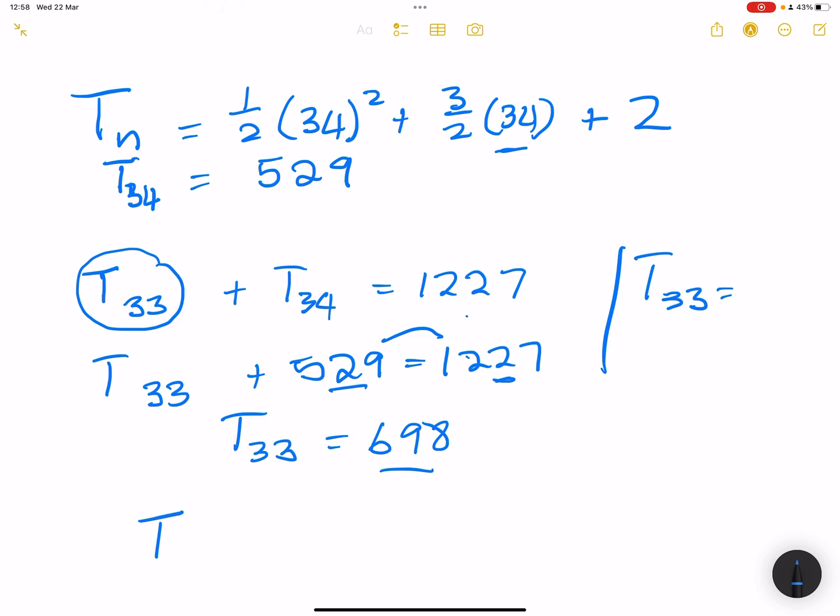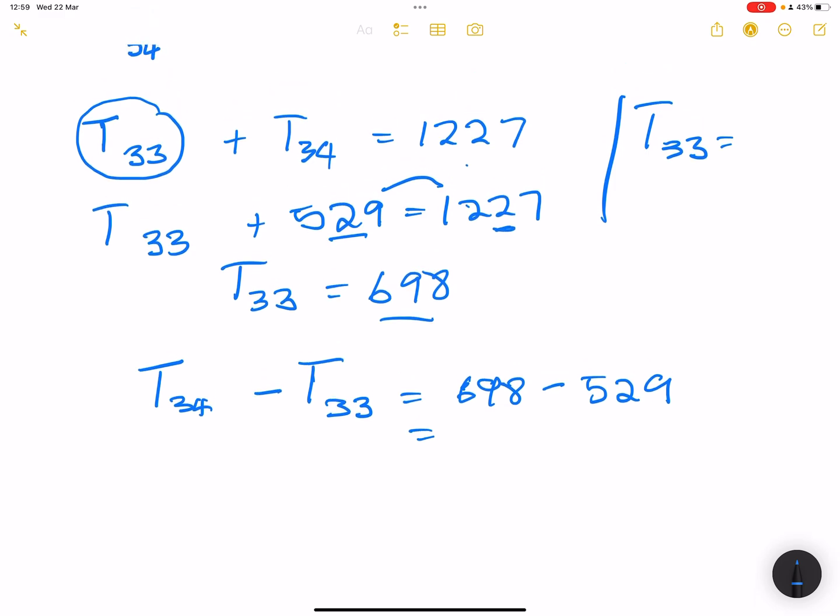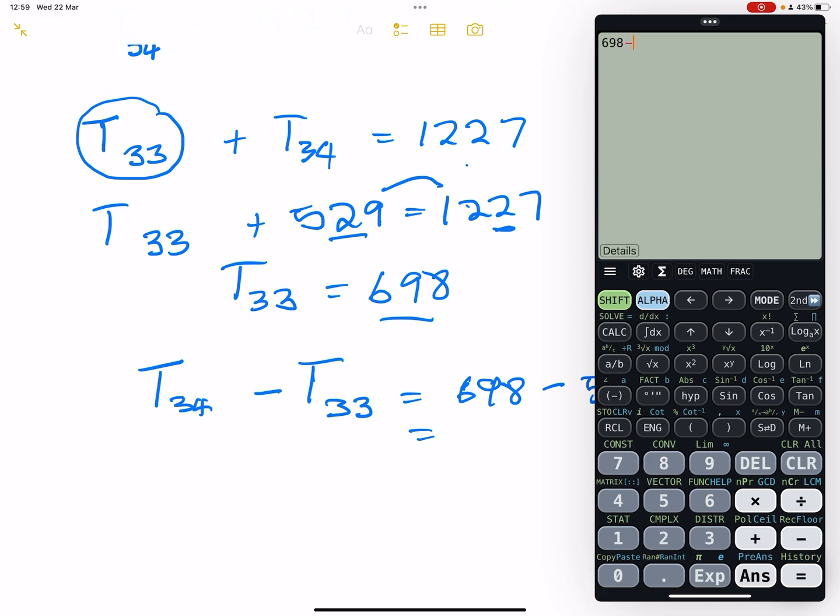But they said find the difference. So I'm going to find T34 minus T33 in this case. What does that give us? It gives us 698 minus 529. So that's 698 minus 529. And this gives us 169.